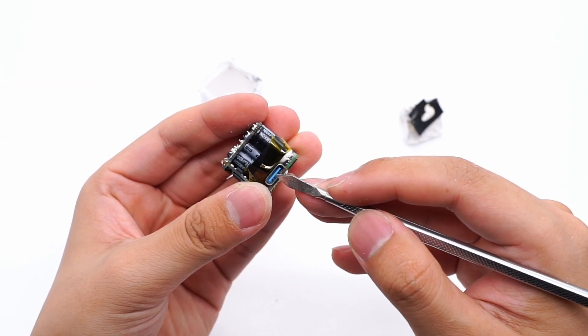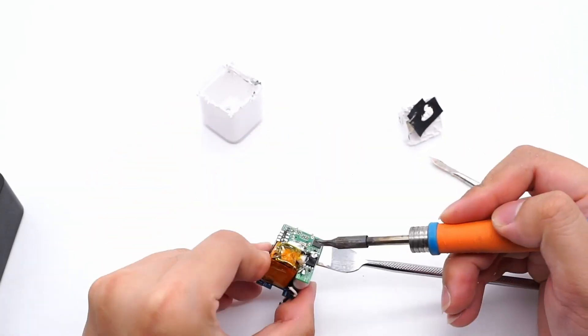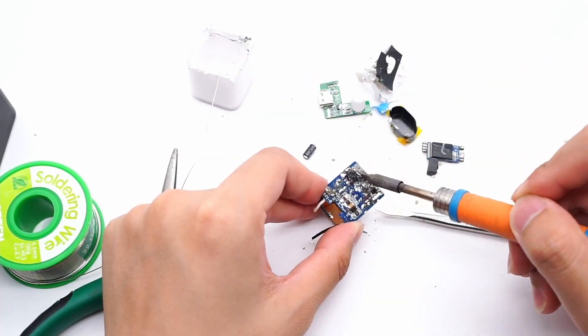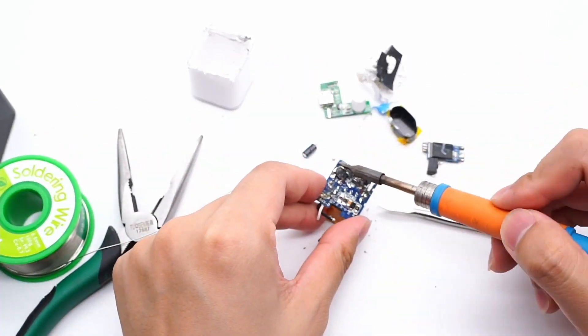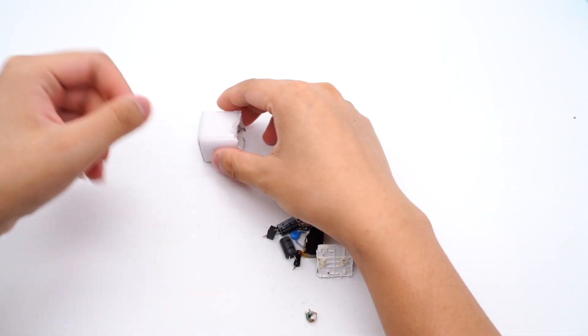The USB-C receptacle port is between capacitors and PCB. Finally, remove all the components. Well, that's all components of this tiny charger.